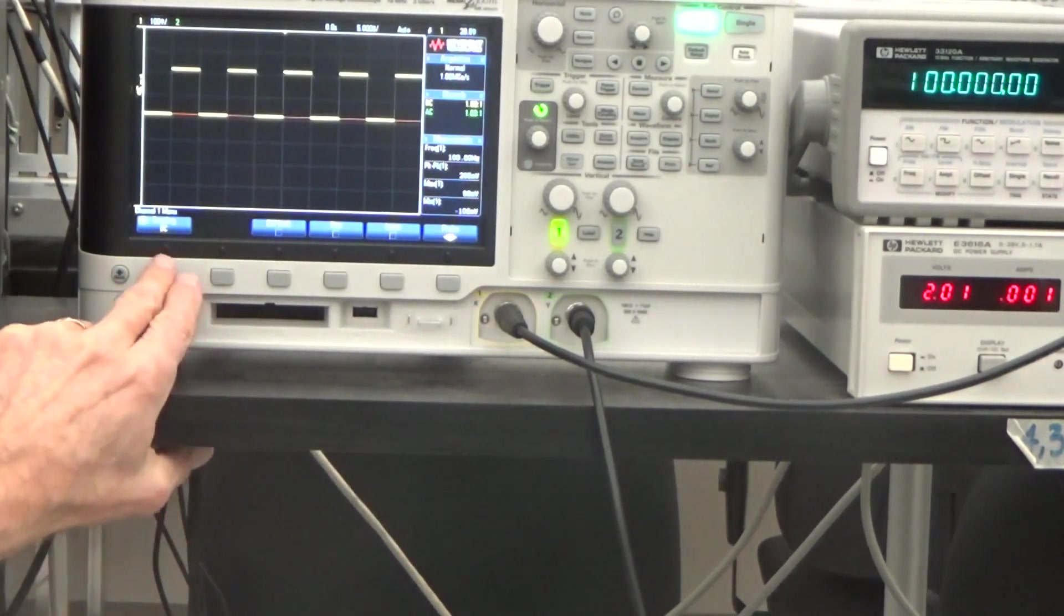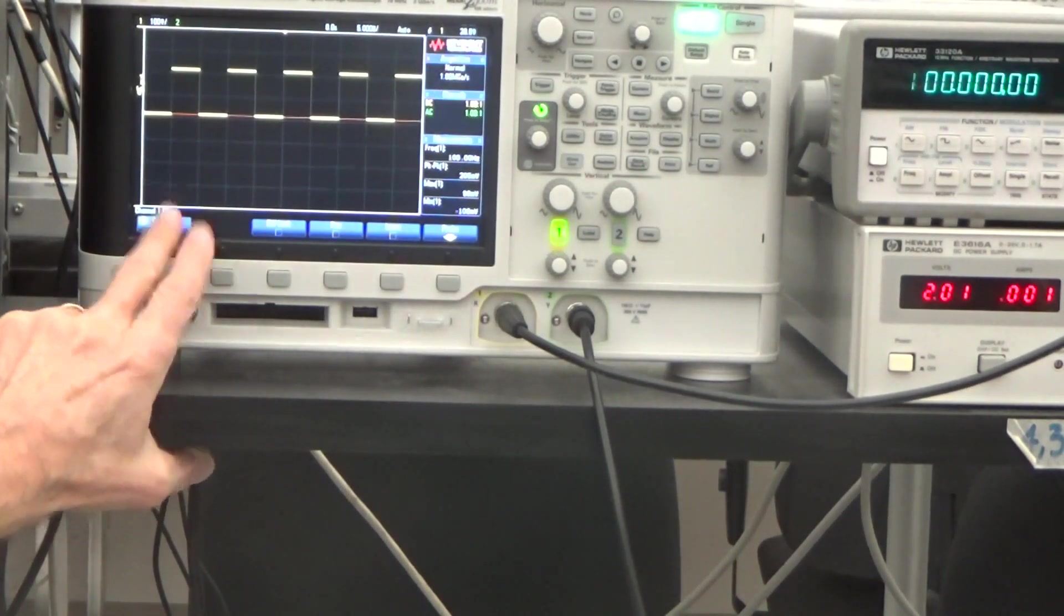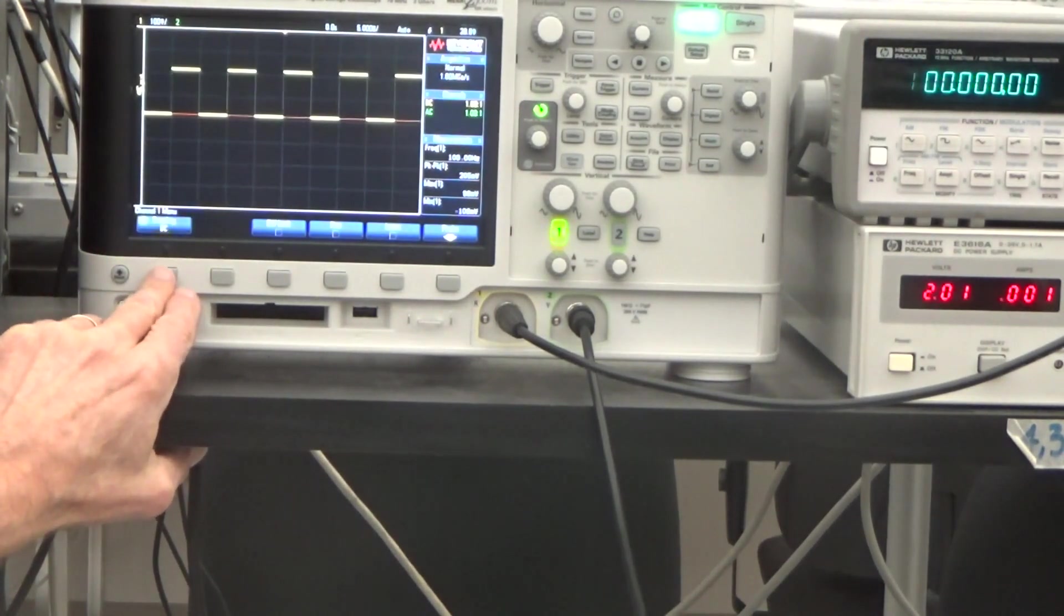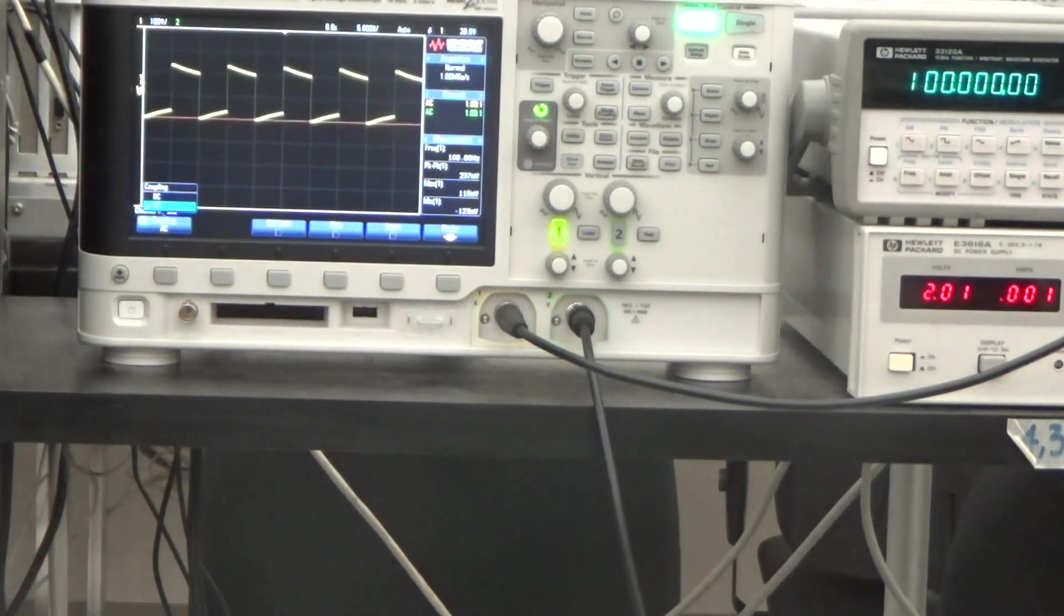But what happens if I AC couple this? What's going to happen here? Well, when I go to AC, boom, you can see that the waveform is no longer a square wave. In fact, it sort of looks like it might be a capacitor discharge curve.